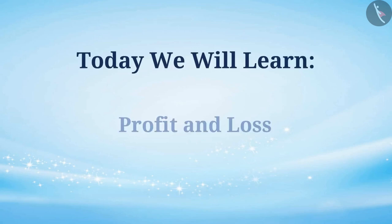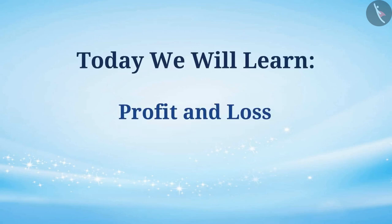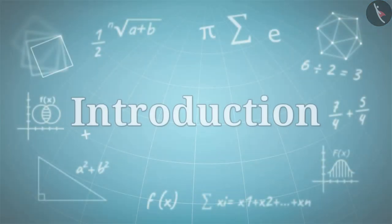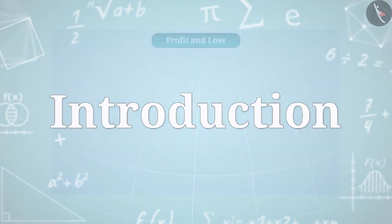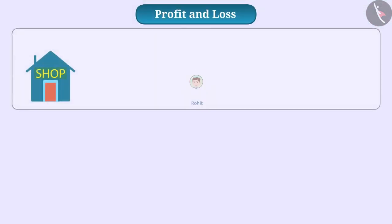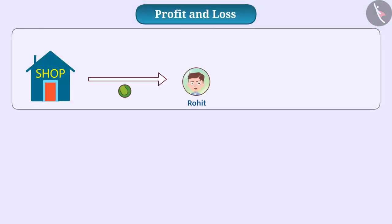Today we will learn Profit and Loss. Rohit bought a ball at a price of Rs 90. The price at which an item is purchased is called the cost price, represented as CP. Thus, the cost price for Rohit was Rs 90.